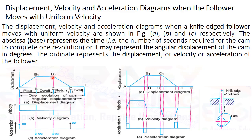After the follower reaches the topmost position of the cam, it takes rest for a short time — B1 to C1 is this very short dwell time. After that, the follower comes down from C1 to D, and the displacement decreases. At point D, displacement of the follower is zero. From D to E, the follower is again at rest — this is called the dwell time.